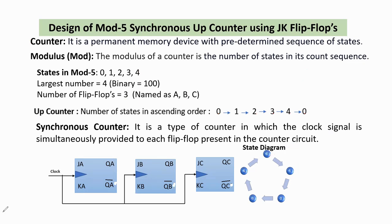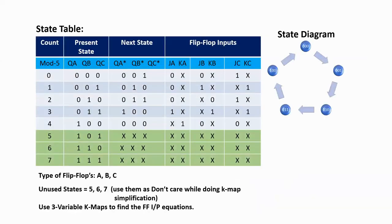Now let us move to the design part. To design the circuit diagram, we have to develop the state table based on the state diagram. I have written the state diagram with binary values instead of state values 0, 1, 2, 3, 4. State 0 is 000, state 1 is 001, state 2 is 010, state 3 is 011, and state 4 is 100. Based on the state diagram, we should develop the state table.